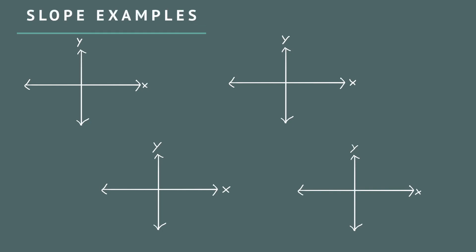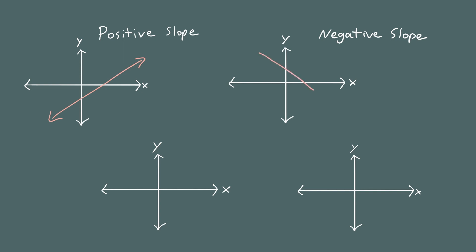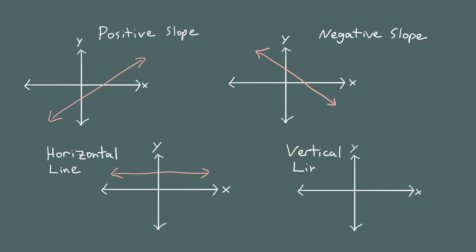Today we're going to compute the slopes of four types of lines. We're going to look at a line with a positive slope — these are lines that move up and to the right. Then we're going to look at a line with a negative slope, which moves downward as you move from left to right. Then we'll look at a horizontal line, and finally a vertical line. Every line you see in algebra will be one of these four types.